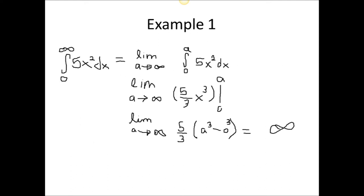Example 1. The only point that is included in the bounds and is undefined on the interval is infinity. So, we set the limit up by putting the limit as a approaches infinity from 0 to a of the integral 5x squared dx. We integrate by adding 1 to the exponent and then dividing by the new exponent. Next, we plug in our bounds and then solve the limit. We end up getting infinity minus 0 which equals infinity.